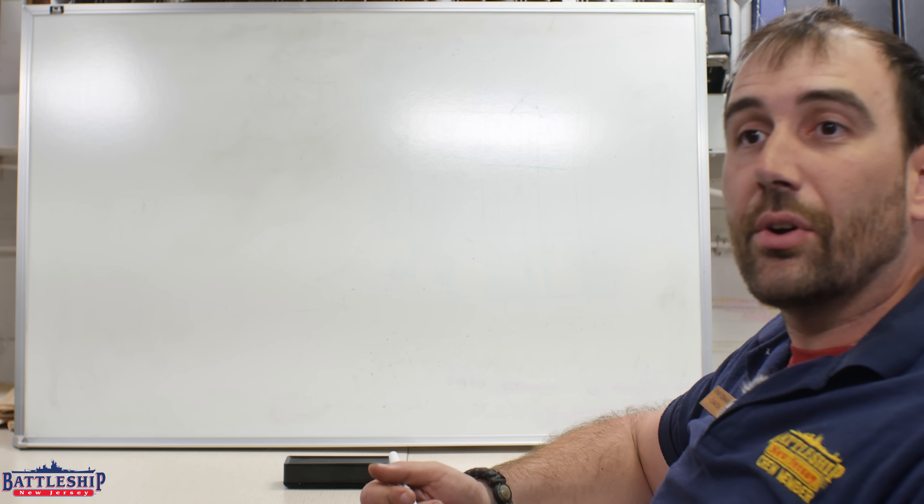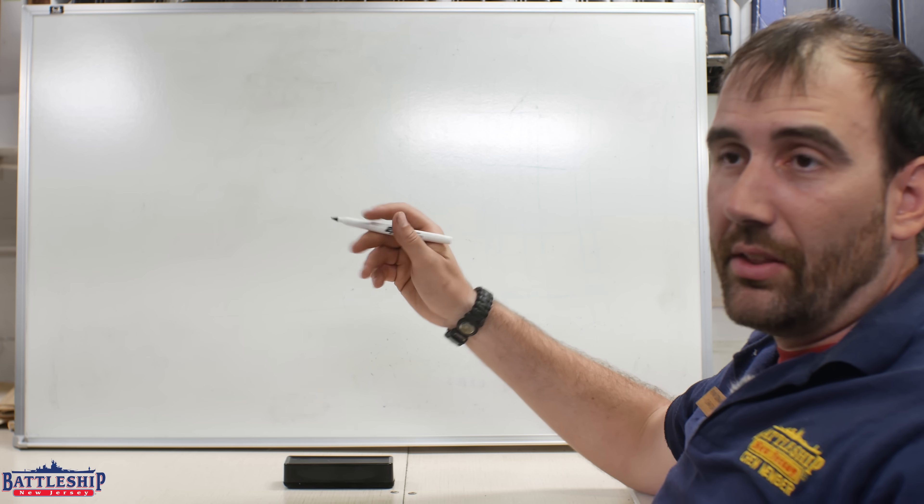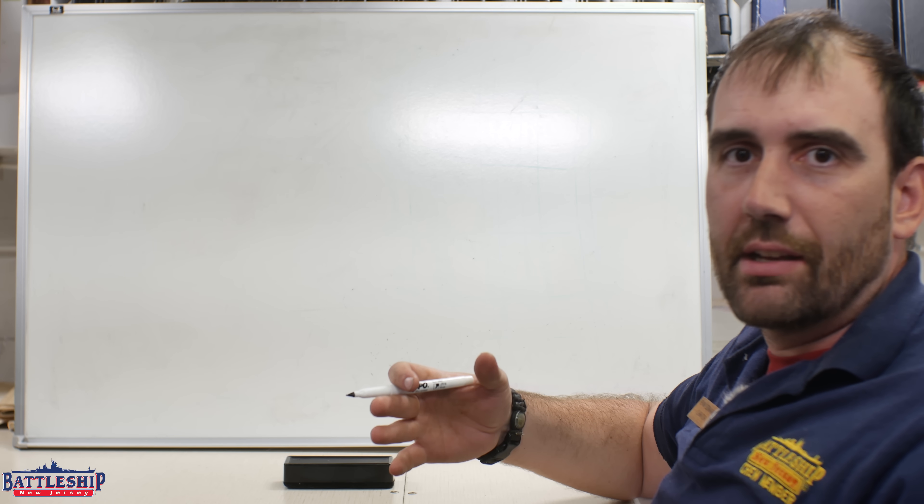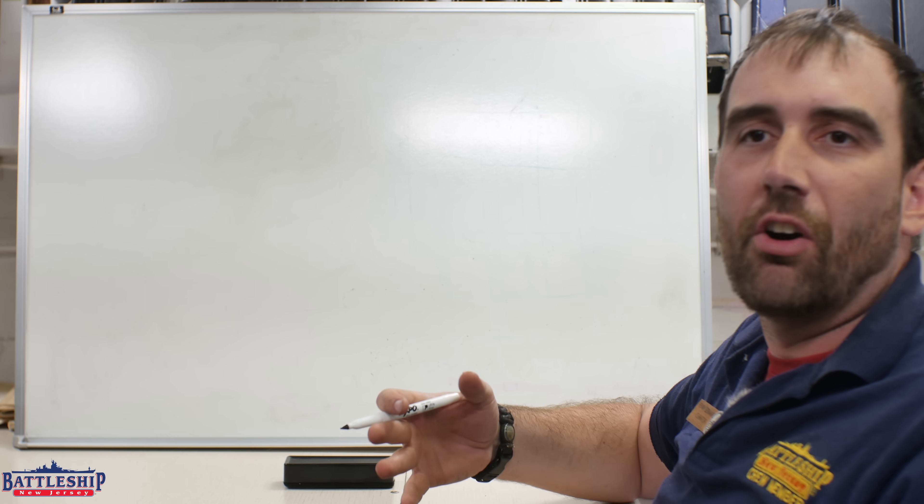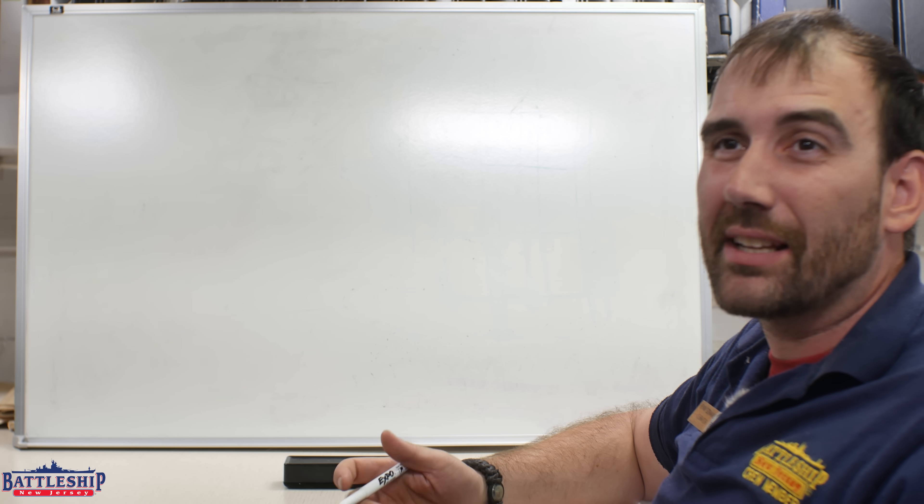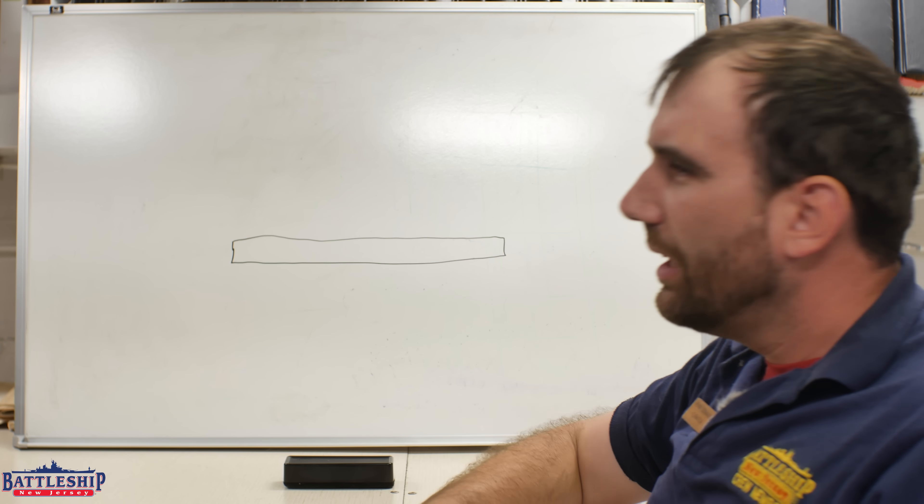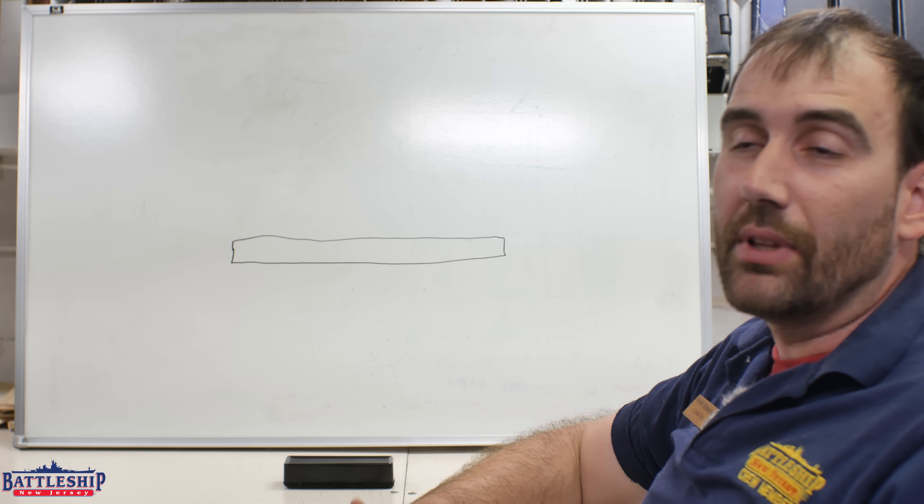So let's start off with our armored belt. Believe it or not, the actual armored belt that you think of when you think of an Iowa-class battleship's 12.1-inch armored belt is only about one deck tall. And it doesn't run the full length of the ship.